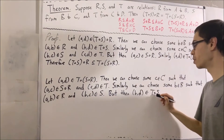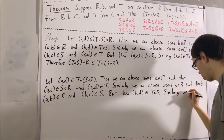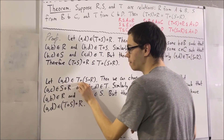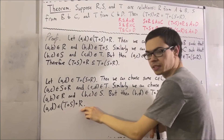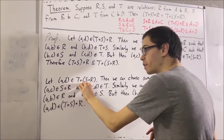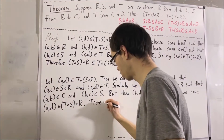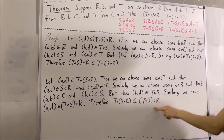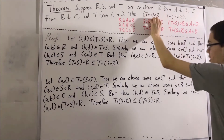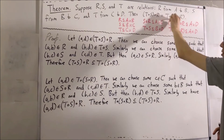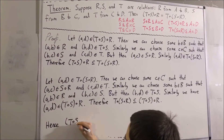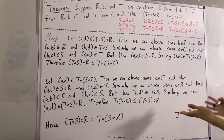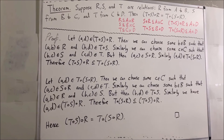We started with an arbitrary element of the second set and showed that same element is also in the first set. Since it was arbitrary, everything in the second set is also in the first set. Notice the two things we have shown: everything in the first set is in the second set, and everything in the second set is in the first set — and that amounts to proving the two sets are equal. This completes the proof. That's the idea of how you could prove a theorem like this.